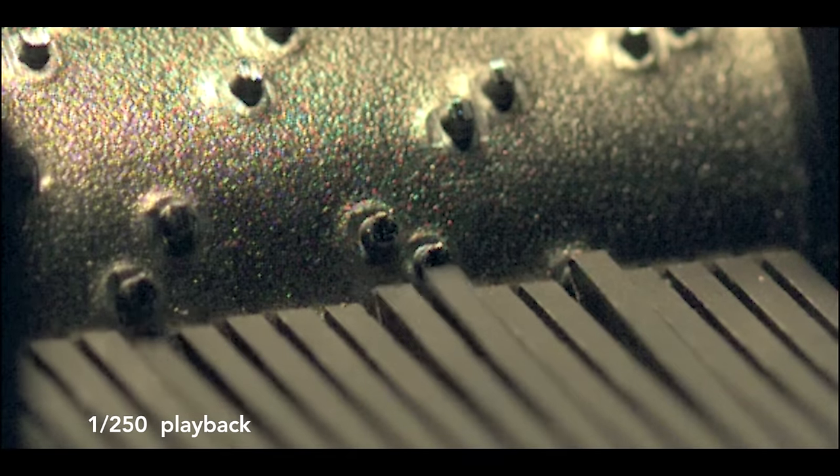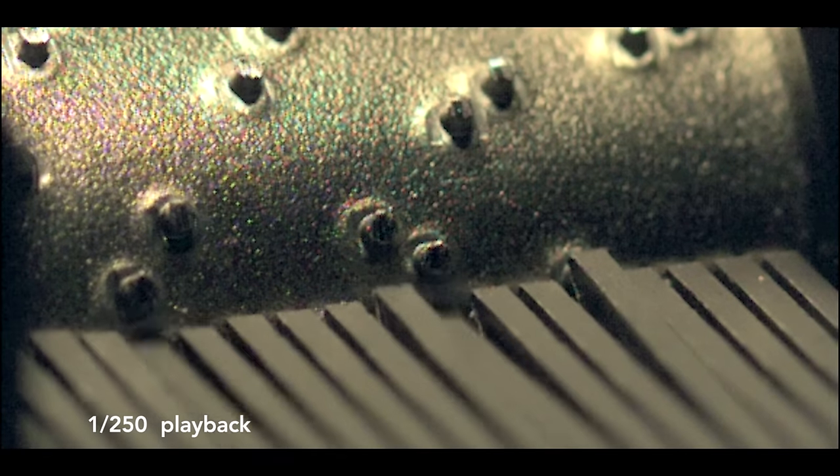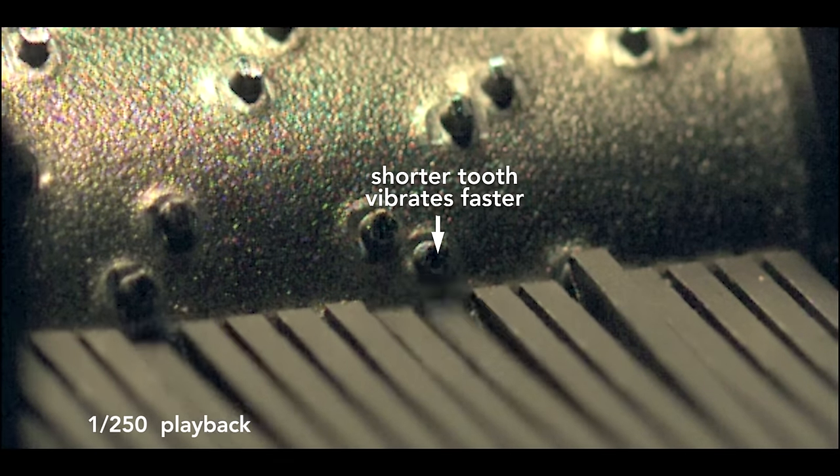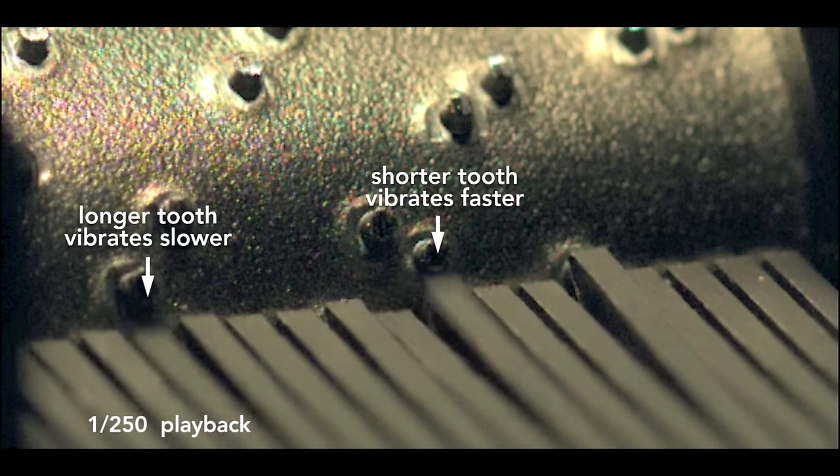The comb works like a multi-pronged tuning fork. In this high-speed video, slowed by 250 times, the drum appears not to move, but you can see the teeth vibrate. The shorter tooth is vibrating faster than this longer one. These vibrations produce the sound.